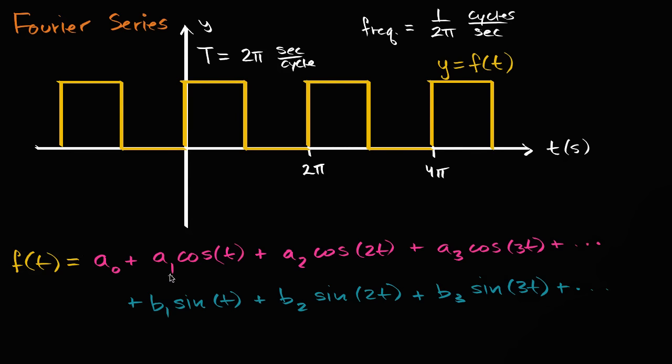So, for example, if a one is much bigger than a two, then that tells you that function contains a lot more of the one over two pi hertz frequency than the one over pi frequency. Or maybe a three is bigger than a one or a two. And so you can start to say, hey, this helps us think of a function not just in terms of the time domain,